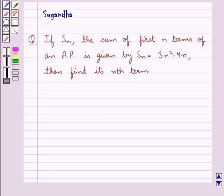Hello and welcome to the session. In this session we discuss the following question which says: if S_n, the sum of first n terms of an AP is given by S_n = 3n² - 4n, then find its nth term.